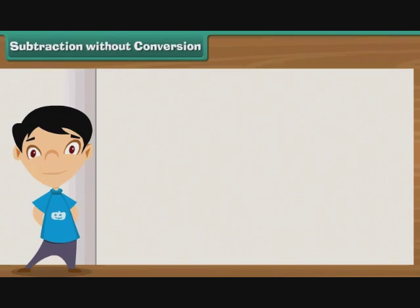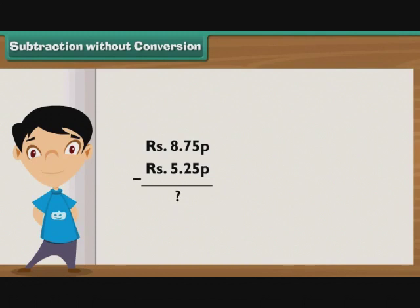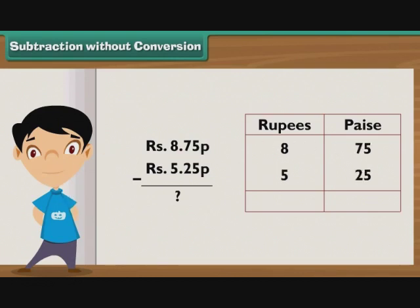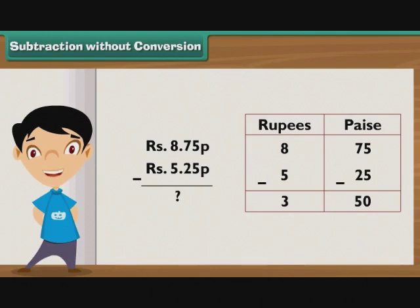Subtraction without conversion. Let's learn how to subtract 5 rupees 25 paise from 8 rupees 75 paise. Write 8 rupees 75 paise as Rupees 8.75 P, then write 5 rupees 25 paise as Rupees 5.25 P under it, so that the rupee part falls in the rupee column and the paise part falls in the paise column. Subtract 25 from 75 to get 50. Write 50 in the paise column. Subtract 5 from 8 to get 3. Write 3 in the rupee column. So the answer is 3 rupees 50 paise.